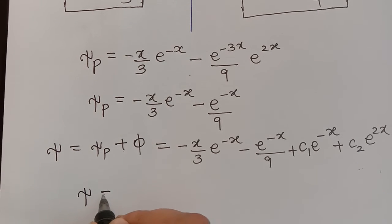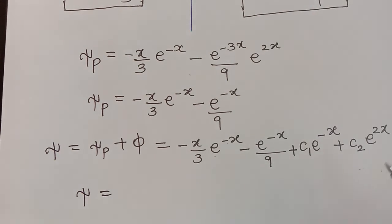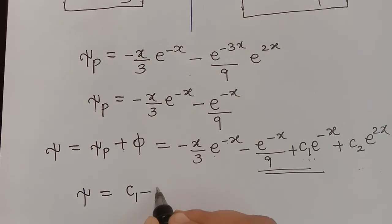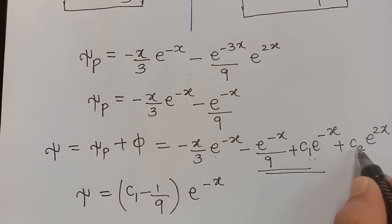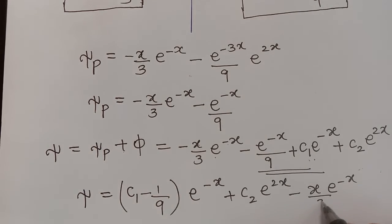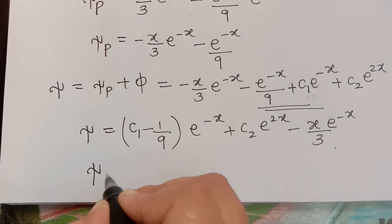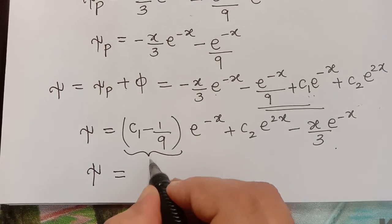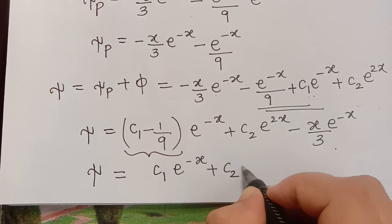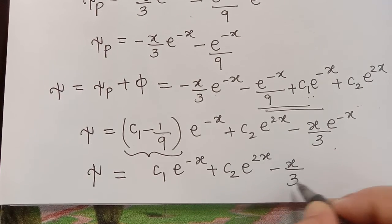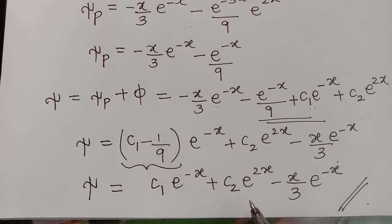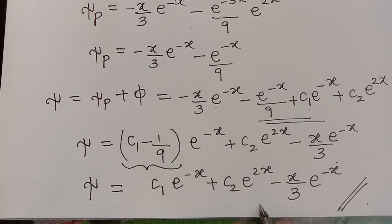Simplifying further, we combine the e^(-x) terms: the constant terms give (c1 minus 1/9)*e^(-x), which we relabel as c1*e^(-x) since it remains a constant. The most general solution is: xi = c1*e^(-x) plus c2*e^(2x) minus (x/3)*e^(-x). This is the most general solution of the given non-homogeneous differential equation of order 2. Hope you have understood this problem. Thank you.